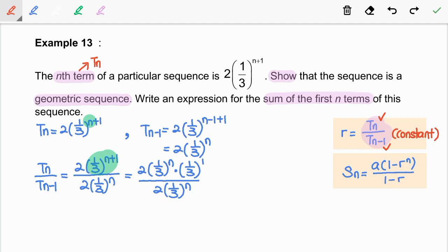So, by simplifying this, the result is a constant which is 1 over 3. This means we have already shown that the sequence is a geometric sequence.